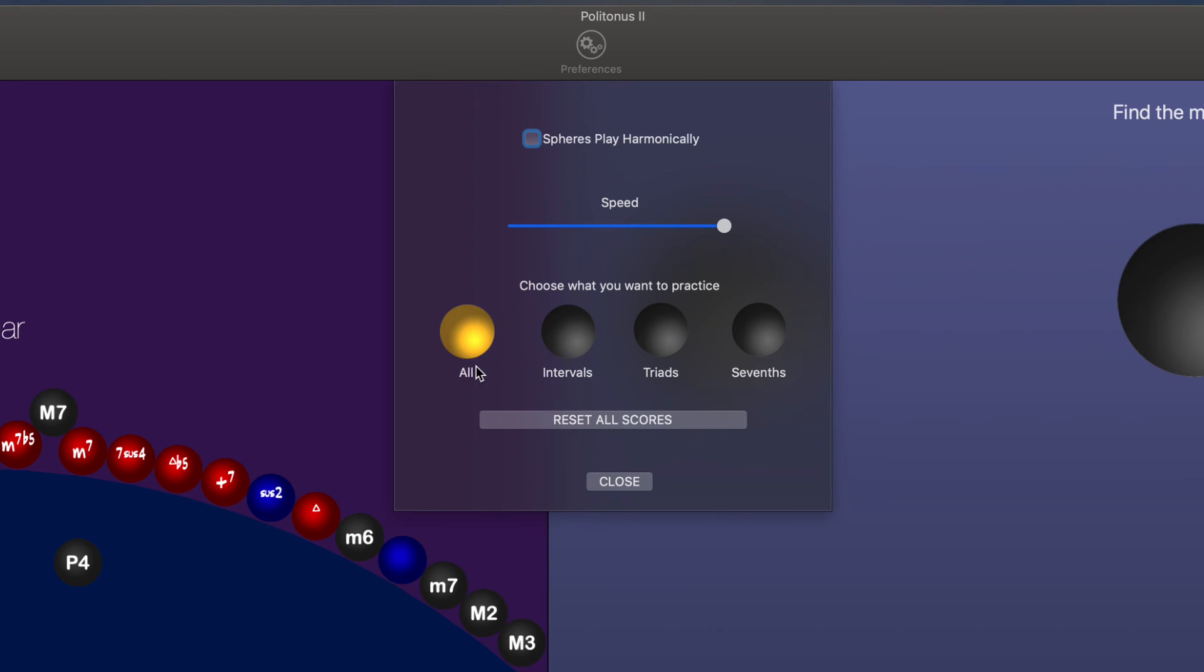As it is right now, we're testing everything—the intervals, the triads, and the seven chords. We're only hearing intervals now because that's how Politonus 2 is going to work. It's going to start you there and sort of graduate you to the other stuff, the triads and then the seven chords. But if you only wanted to work on seven chords or just triads or just intervals, you have the option to do that here.